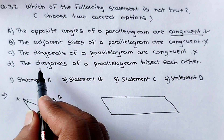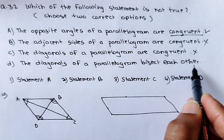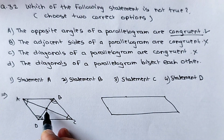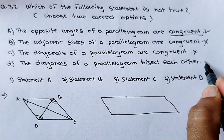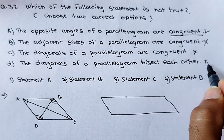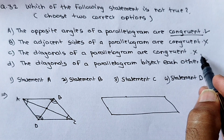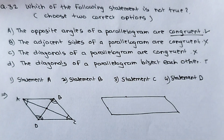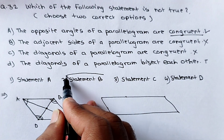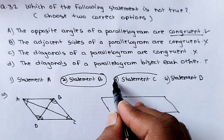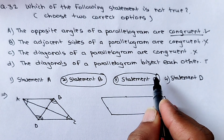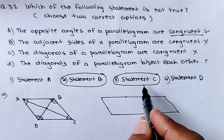The fourth statement: the diagonals of a parallelogram bisect each other. This is a known property of parallelograms, so this statement is true. Therefore, the statements that are not true are B and C — the second and third options are our required answers.